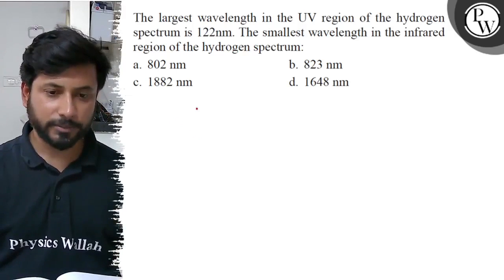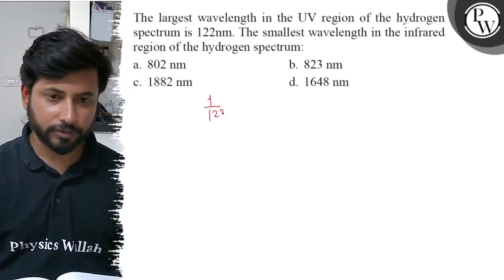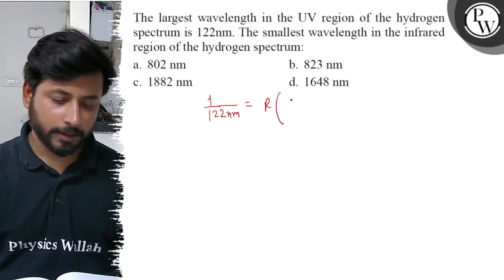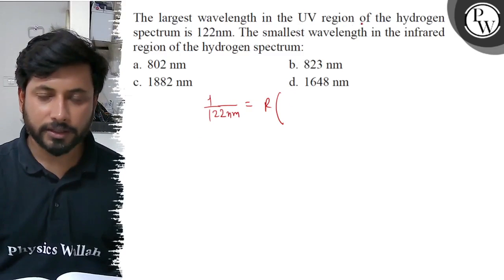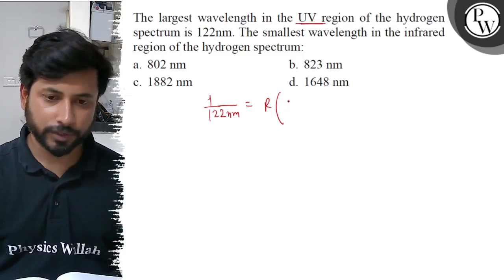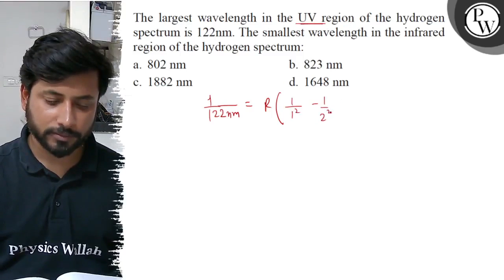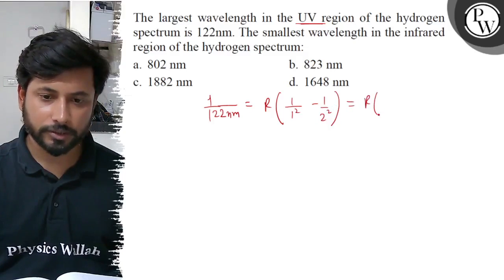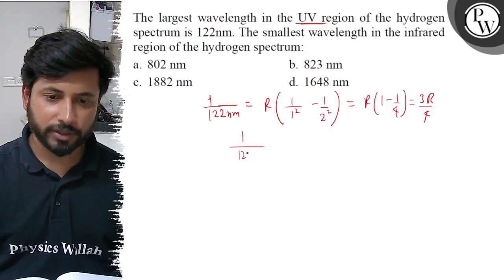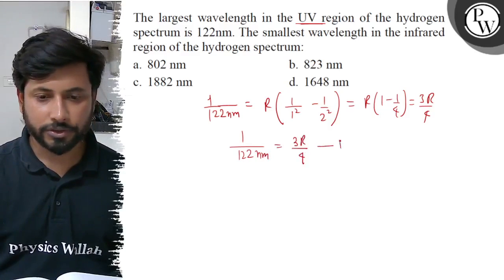This is the first case. 1 by 122 nanometer equals to R. This is our UV region, UV region, i.e. n equals to 2 to 1. Here n equals to 1 square minus 1 by 2 square. Here r into 1 minus 1 by 4, so 3r by 4. Here 1 by 122 nanometer equals to 3r by 4. This is equation number 1.